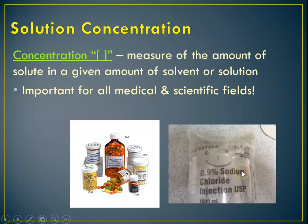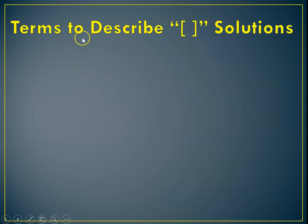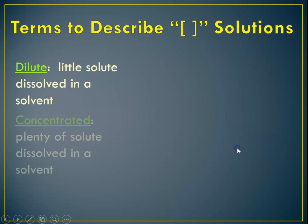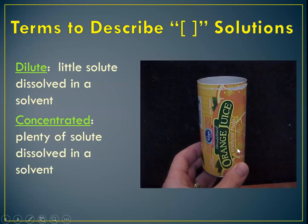And so, for instance, when you're in the hospital, if you need an IV, the sodium chloride concentration that our bodies can handle is 0.9%. So what terms do we use to describe the concentration of solution? Again, dilute little solute dissolved in solvent, concentrated lots.